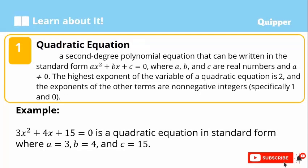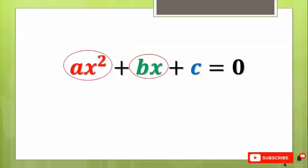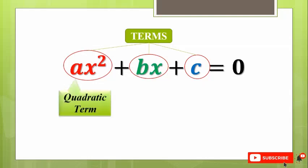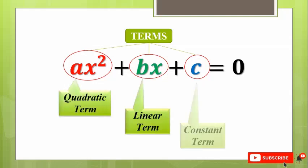But how will we know if the given equation is quadratic? And how can we identify the values of a, b, c? Note that a quadratic equation has terms: the first term, second term, and third term. The first is the quadratic term. The second term is the linear term. And the third term is the constant term. Always remember that the coefficient a is with the quadratic term, b is in the linear term, and c is constant. Whether the terms are interchanged, when you are asked to identify the values of a, b, c, always check the terms.